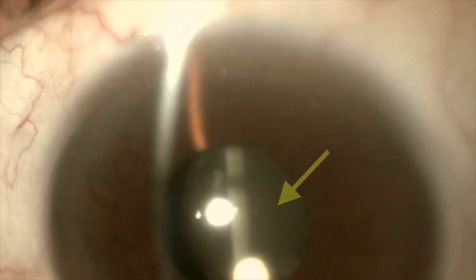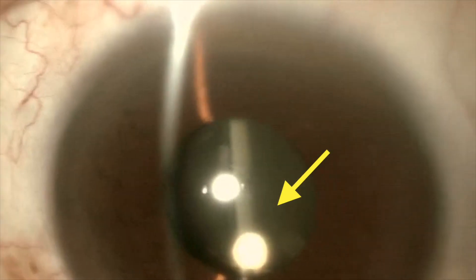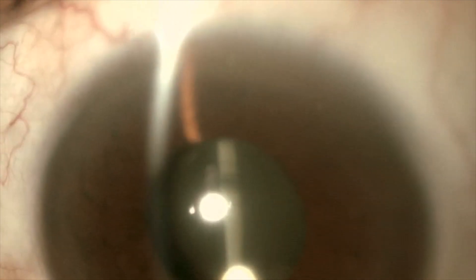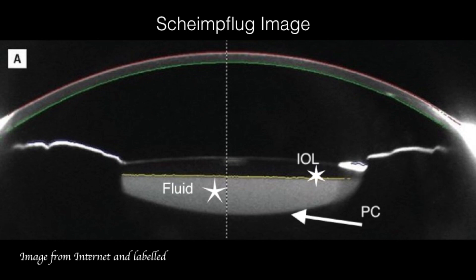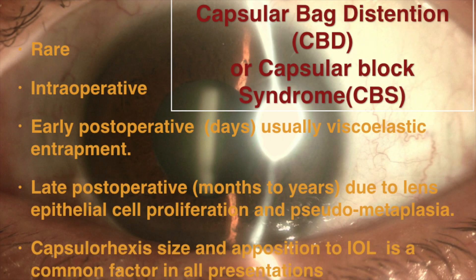On more meticulous examination, you can notice that there is a turbid fluid behind the posterior surface of the intraocular lens, in front of the posterior capsule. This is clearly seen clinically on slit-lamp examination. If you have the chance to see a Scheimpflug image of this case, you will see clearly the fluid entrapped behind the intraocular lens in front of the posterior capsule.